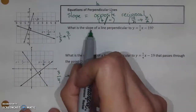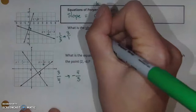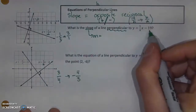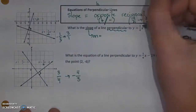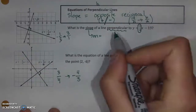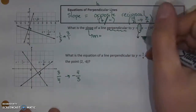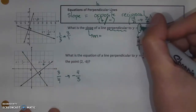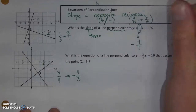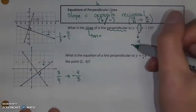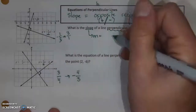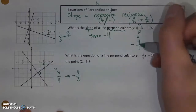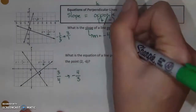If you want the slope of a line that is perpendicular to y equals one-fourth x minus 19, all I need is the slope. I take one-fourth, change it to its reciprocal — now four over one — and change it to its opposite: it was positive, now it's negative. We don't typically write negative 4 over 1; we just write negative 4, since 4 divided by 1 is just 4. So m equals negative 4, and we're done.